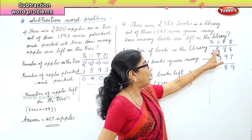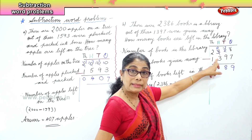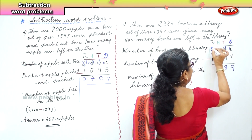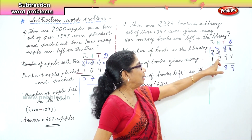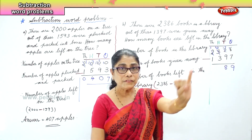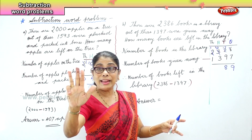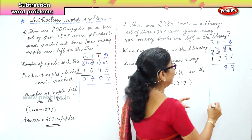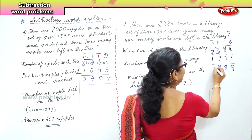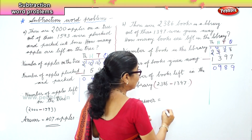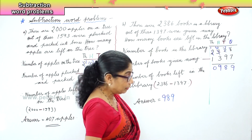Now in the hundreds place we have 2 take away 3. Three is bigger than 2, so we borrow 1 from the thousands place and bring it over to the hundreds. We have 12 take away 3. After 3 count 4, 5, 6, 7, 8, 9, 10, 11, 12 — that is 9. So 12 take away 3 is 9. Then 1 take away 1 is 0 in the thousands. The answer is 989 books left in the library.